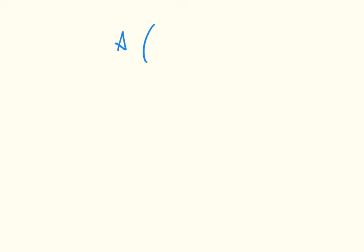In this video, we're going to take a look at a Moran process on a game. So if we have a matrix A — a general 2x2 matrix — since this applies for games, we have two types of individuals.